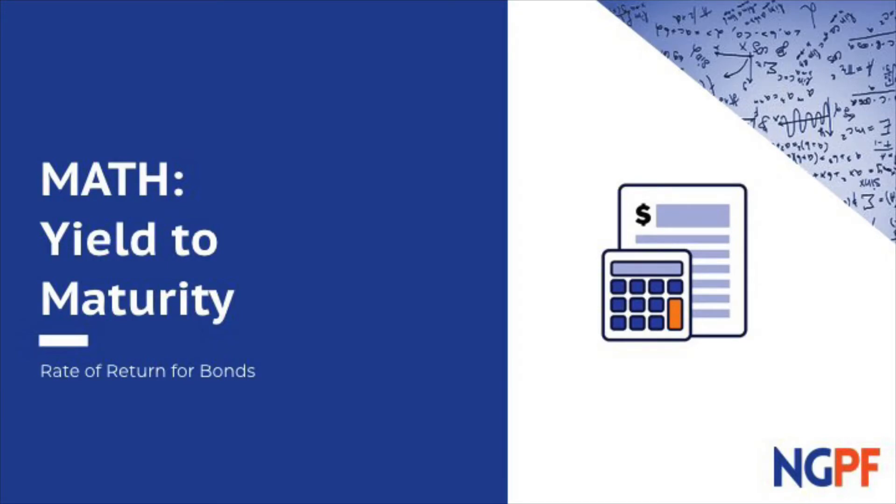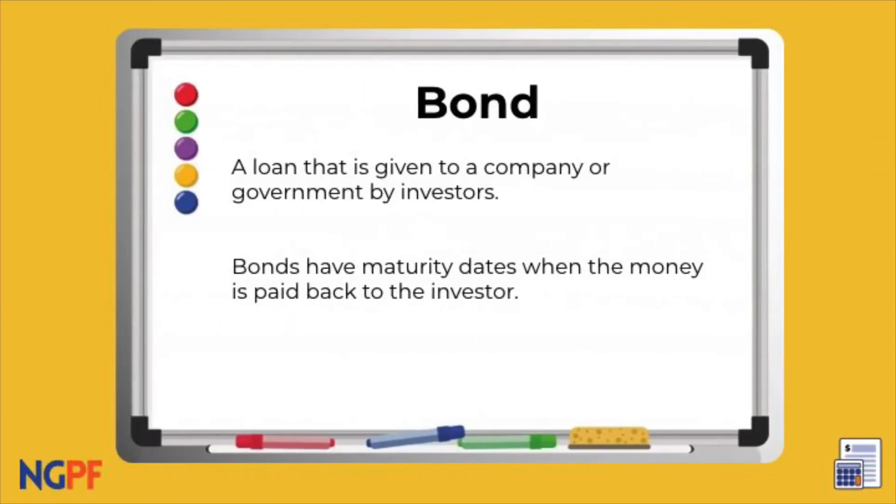What is a bond? A bond is a loan that is given to a company or government by investors. They have maturity dates when the money is paid back to the lender.